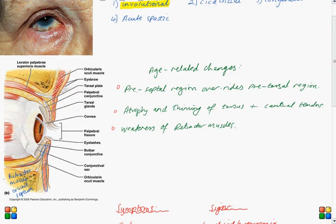Now what happens is that the preceptal region of the orbicularis oculi muscle overrides the pretarsal region upon lid closure. This causes the lower portion of the lids to turn away from the globe and the outer portion to turn inwards and invert.